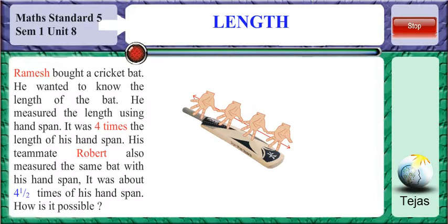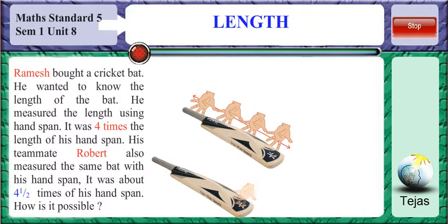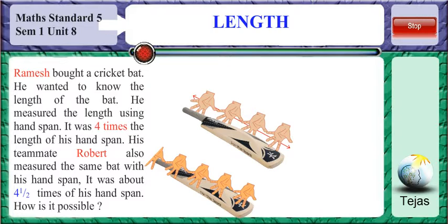His teammate Robert also measured the same bat with his hand span. It was about four and a half times of his hand span. How is it possible that the hand span is different for both people? This is because Robert's hand is smaller than Ramesh's. Therefore, his hand measured it to be four and a half times of his hand span.